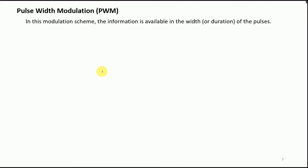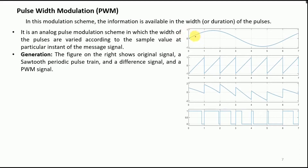For pulse width modulation, the information is available in the width or duration of the pulses. The message signal m(t) is our original signal, plotted with amplitude on the y-axis and time on the x-axis. The PWM signal stores its information in the width of the pulses. It is an analog pulse modulation scheme.